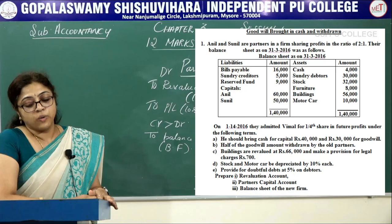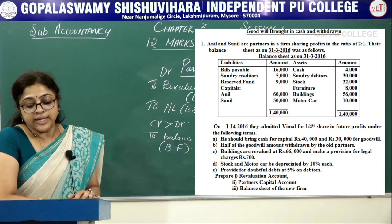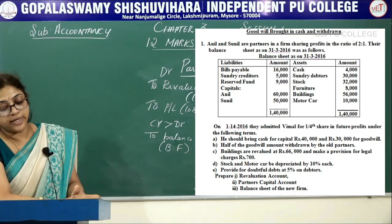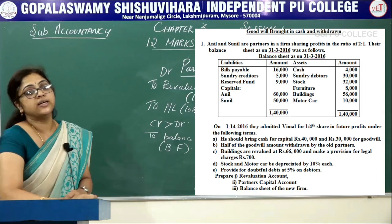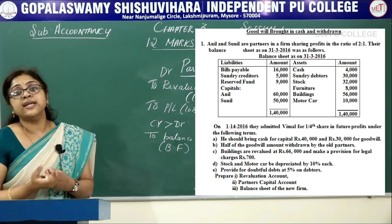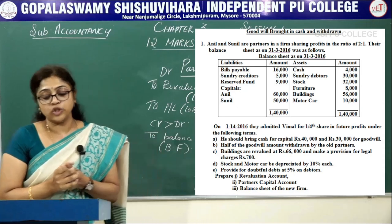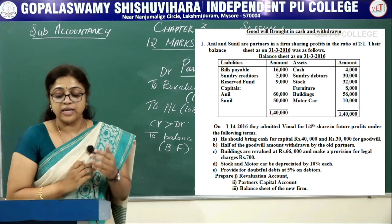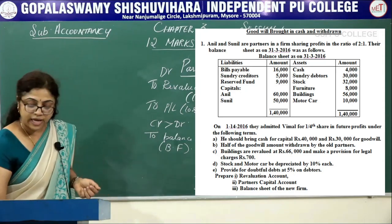Extracting the information: Anil and Sunil are old partners sharing profits in ratio 2:1. They admit new partner Vimal for one-fourth share. He brings cash for capital ₹40,000 and ₹30,000 for goodwill, with half the goodwill amount withdrawn by the old partners. This is the case of goodwill brought in cash and withdrawn. The building is revalued at ₹66,000 and a provision for legal charges of ₹700 is made. Let us see how these affect the revaluation account.